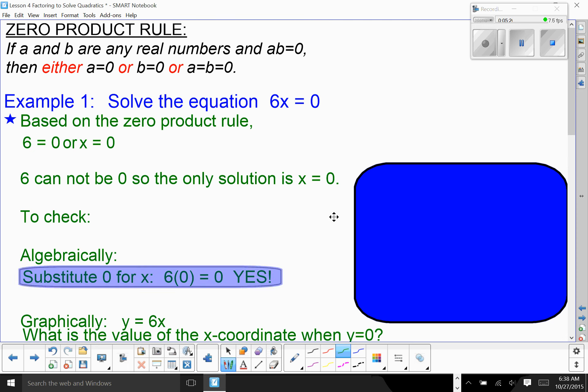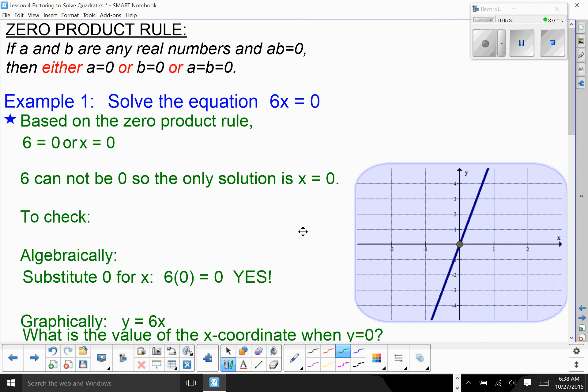I can check it algebraically. That works. And I can check it graphically. It works again. Notice that when X is zero, Y is zero. I am looking for what is X when Y equals zero. That's what it means to solve.